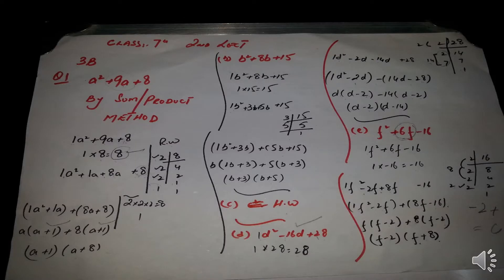The first question is a² + 9a + 8. We use the sum and product method. When the coefficient of the highest power is 1, and the last constant term is 8, we split the middle value 9a into 2 terms. We get 1 and 8 — when we multiply 1 and 8 we get 8, and when we add 1 plus 8 we get 9.